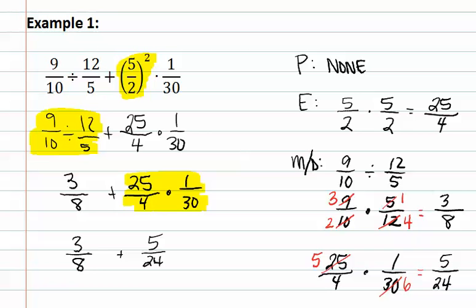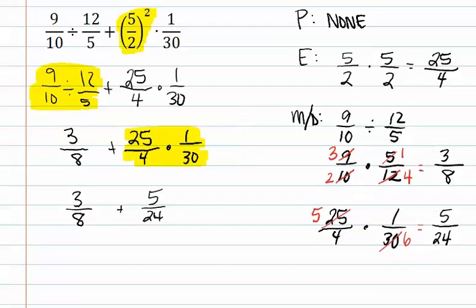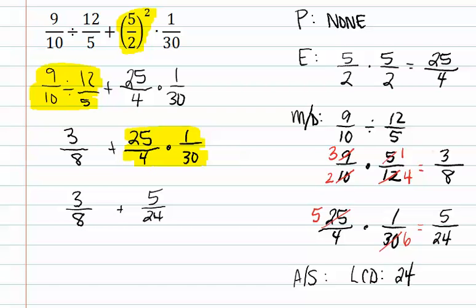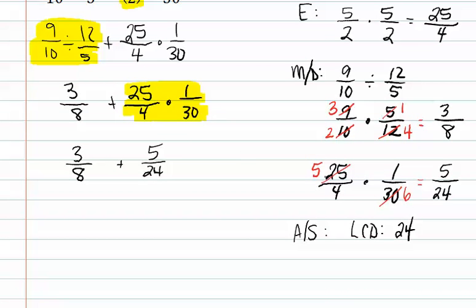We have now simplified it down to 3 eighths plus 5 twenty-fourths, and we are ready for the add and subtract step. Remember, when adding and subtracting fractions, we must have a common denominator. The least common denominator of these two numbers is 24. So we must change each of them to make them match. 3 eighths will need to be multiplied by 3 on both the numerator and the denominator, and the 5 twenty-fourths does not need to change.